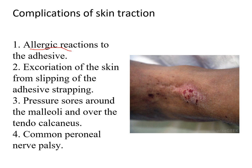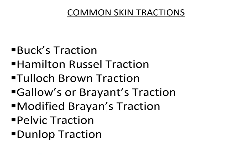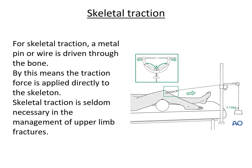Complications of skin traction include: allergic reaction to the adhesive, excoriation of the skin, pressure sores or ulcers around the malleolus and over the tendo calcaneus, and common peroneal nerve palsy which can lead to foot drop — a very common complication if proper precautions are not taken. Common examples of skin traction include: Buck's traction, Hamilton-Russell traction, Perkin's traction, Gallows or Bryant's traction, modified Bryant's traction, pelvic traction, and Dunlop traction.